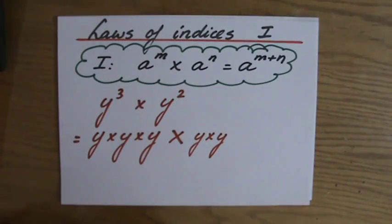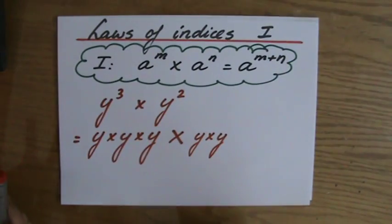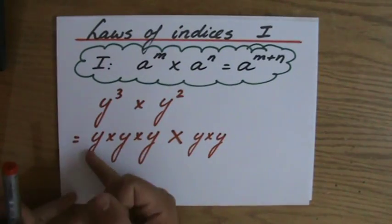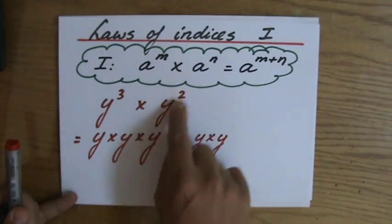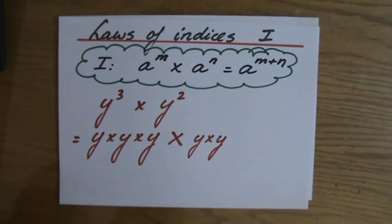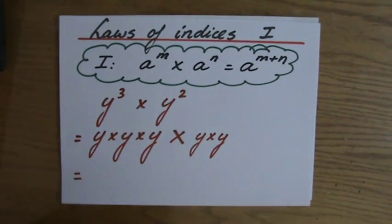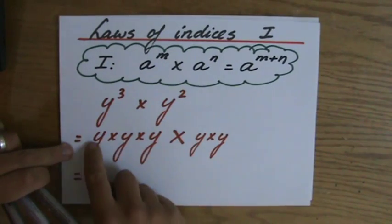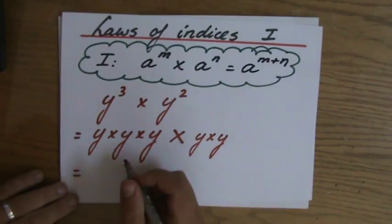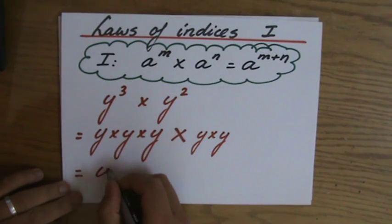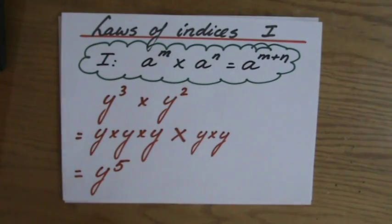So I've just rewritten this question and expanded it to show that y to the power 3 is y times y times y, times y to the power 2 which is y times y. So how many of those y's do I multiply with themselves? 1, 2, 3, 4, 5 indeed. So that is y to the power 5, which is 3 plus 2.